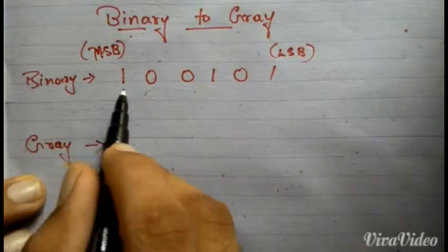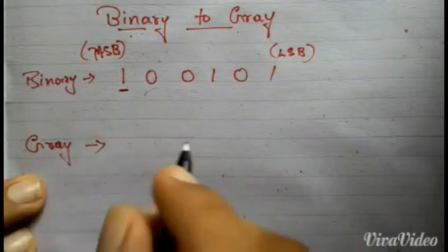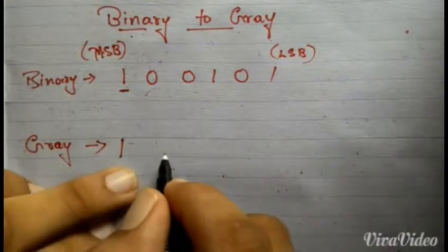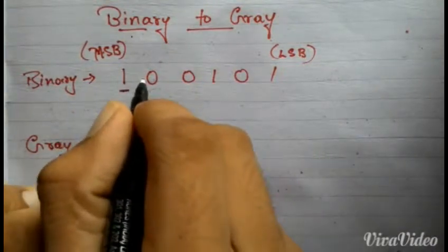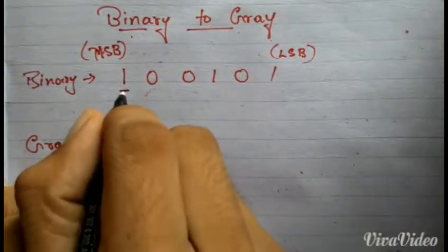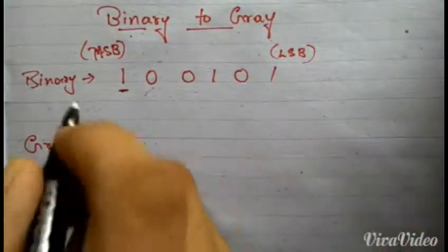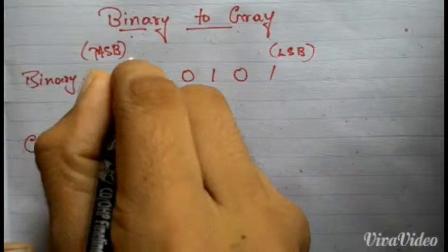Like this. And to write the next bits, we have to perform XOR operation between adjacent bits. Since the XOR operation is like addition, we can directly add. So sum of this plus this, that is 1 plus 0 is 1, and sum of these two, that is 0 plus 0 is 0.